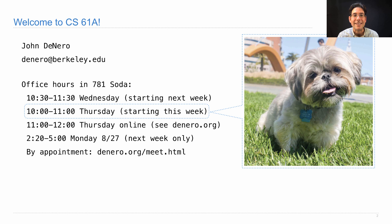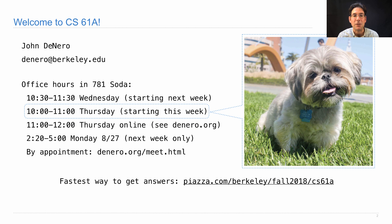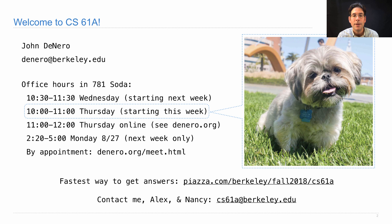The fastest way to contact me is actually not email or office hours, but to post on Piazza, which I hope you've already joined. When you post on Piazza, anyone from the staff or the students could respond, and that means you can get questions answered quite quickly. You can also email me and the two heads of the course staff, Alex and Nancy, at cs61a@berkeley.edu.